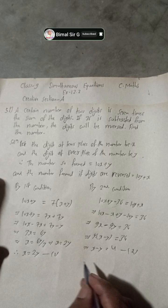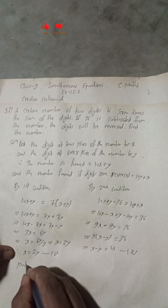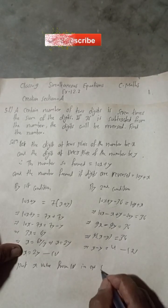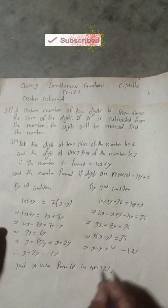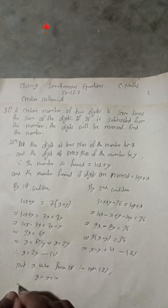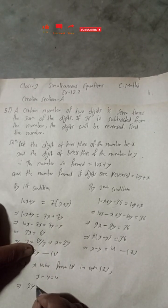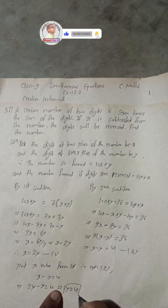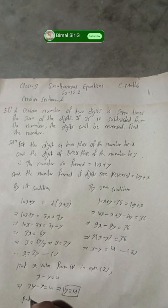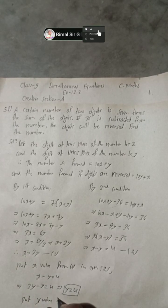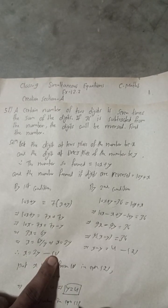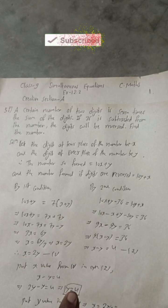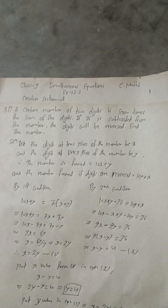Now we solve the equations. From Equation 1, x = 2y. Substituting into Equation 2: 2y − y = 4, so y = 4. Now putting y = 4 into Equation 1: x = 2y = 2 × 4 = 8. Therefore x = 8.